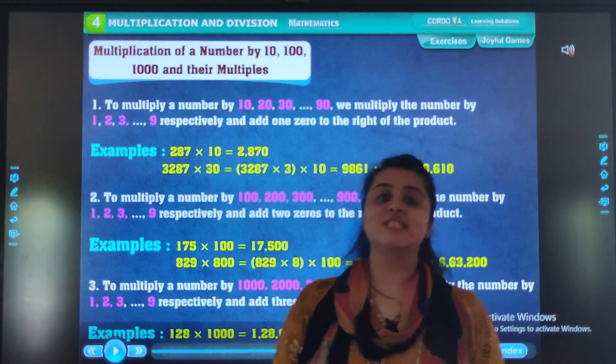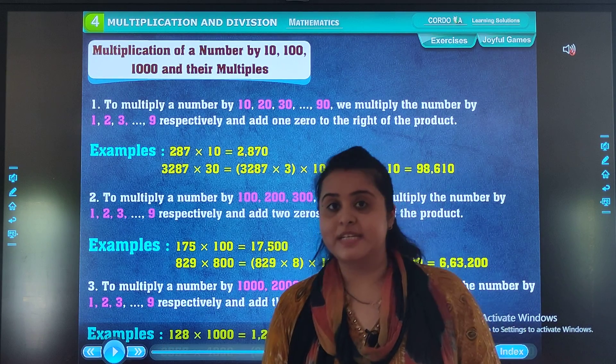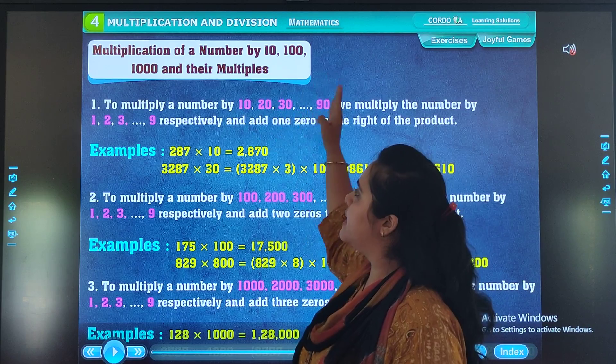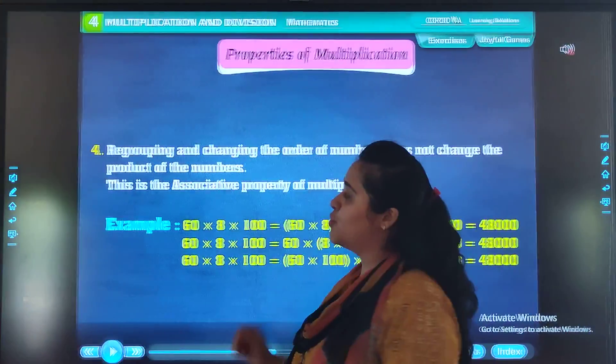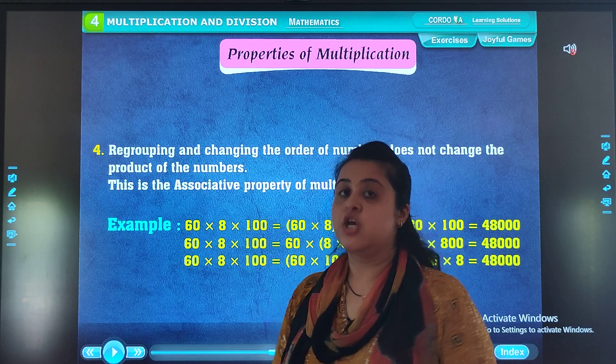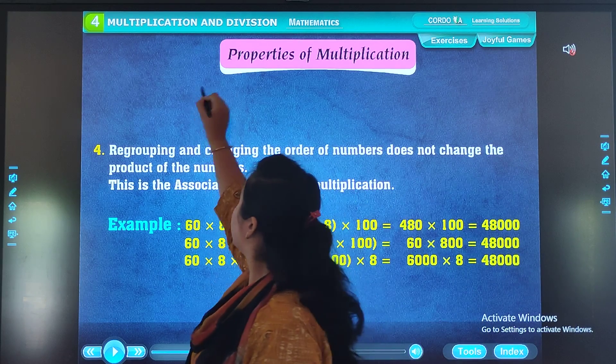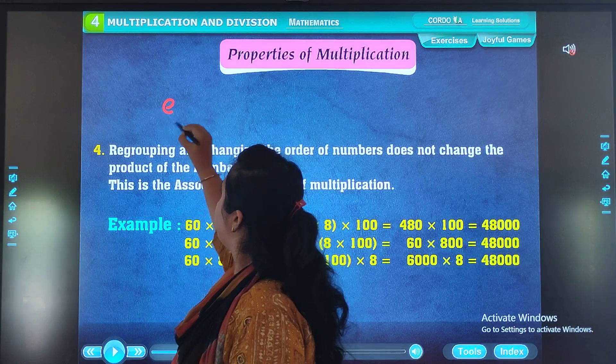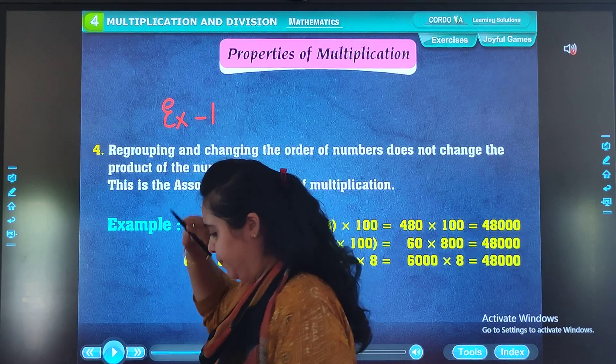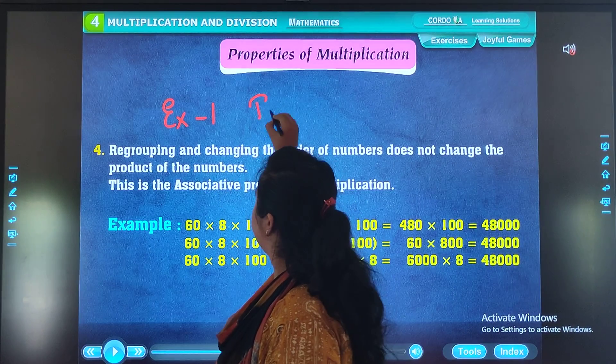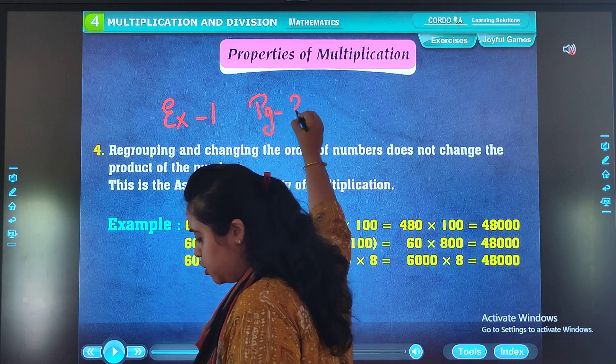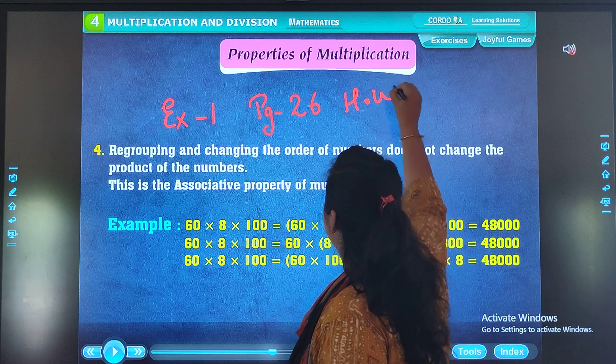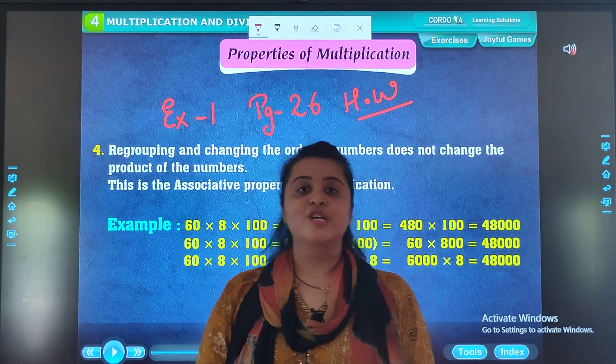So students, in next part we will be discussing the topic that is when we multiply a number by 10, 100, and thousands. So students, your homework is you have to solve your exercise number 1 on page number 26 of your textbook.